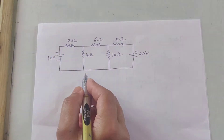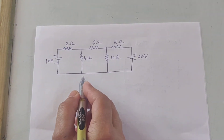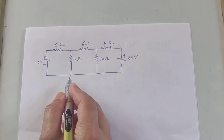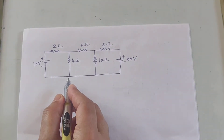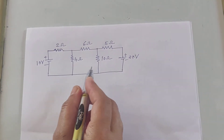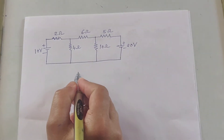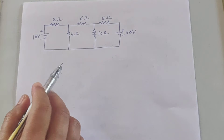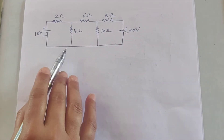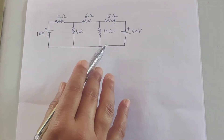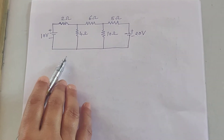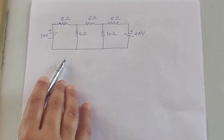Hello friends, in the last video we discussed loop analysis. Now we can solve some numerical problems based on loop analysis. So we take the first circuit diagram and find out the loop current.